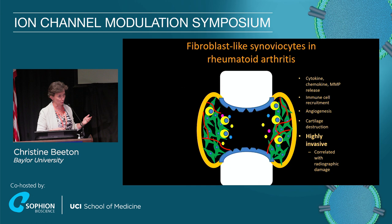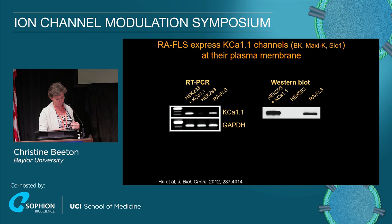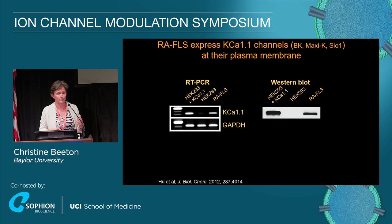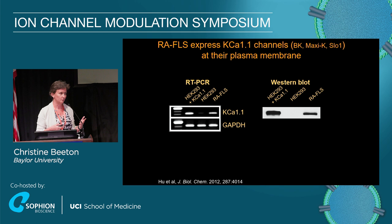We are interested in ion channels, in potassium channels. So we screened FLS from patients with rheumatoid arthritis for potassium channels. When we did RT-PCR and Western blots, the one channel that we always found in those cells was the KCA1.1 channel, which you may also know as the BK channel. Of course, finding mRNA or protein doesn't mean it forms a functional channel or that the channel is at the plasma membrane — and that's what we're interested in studying.